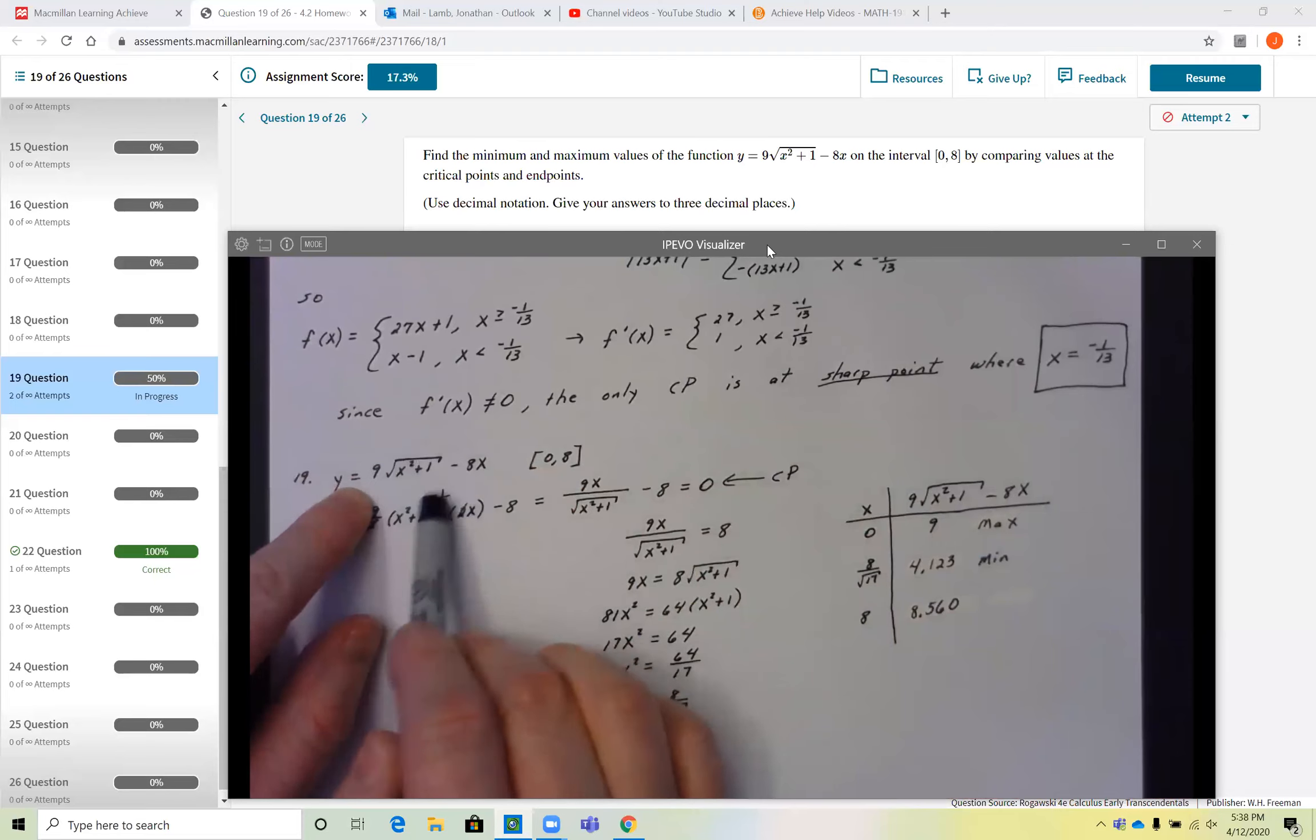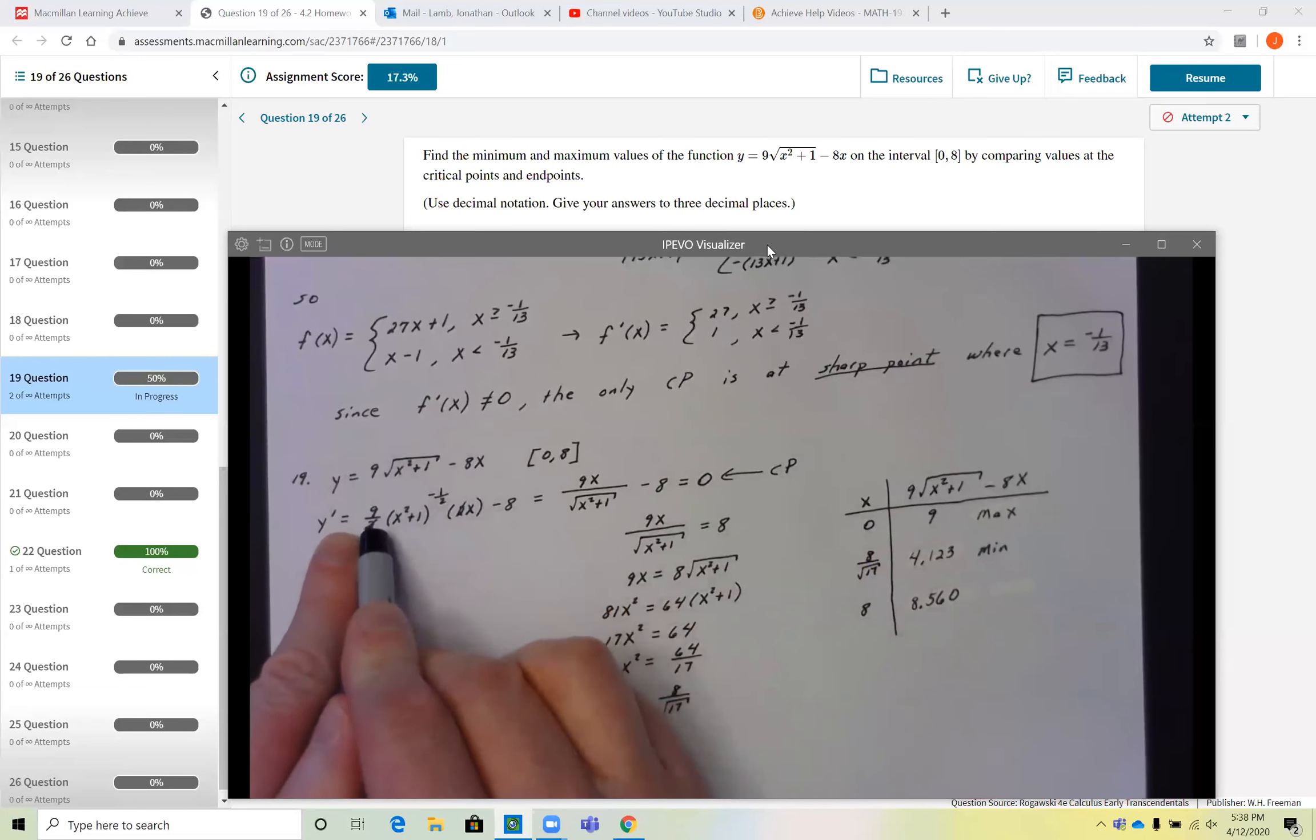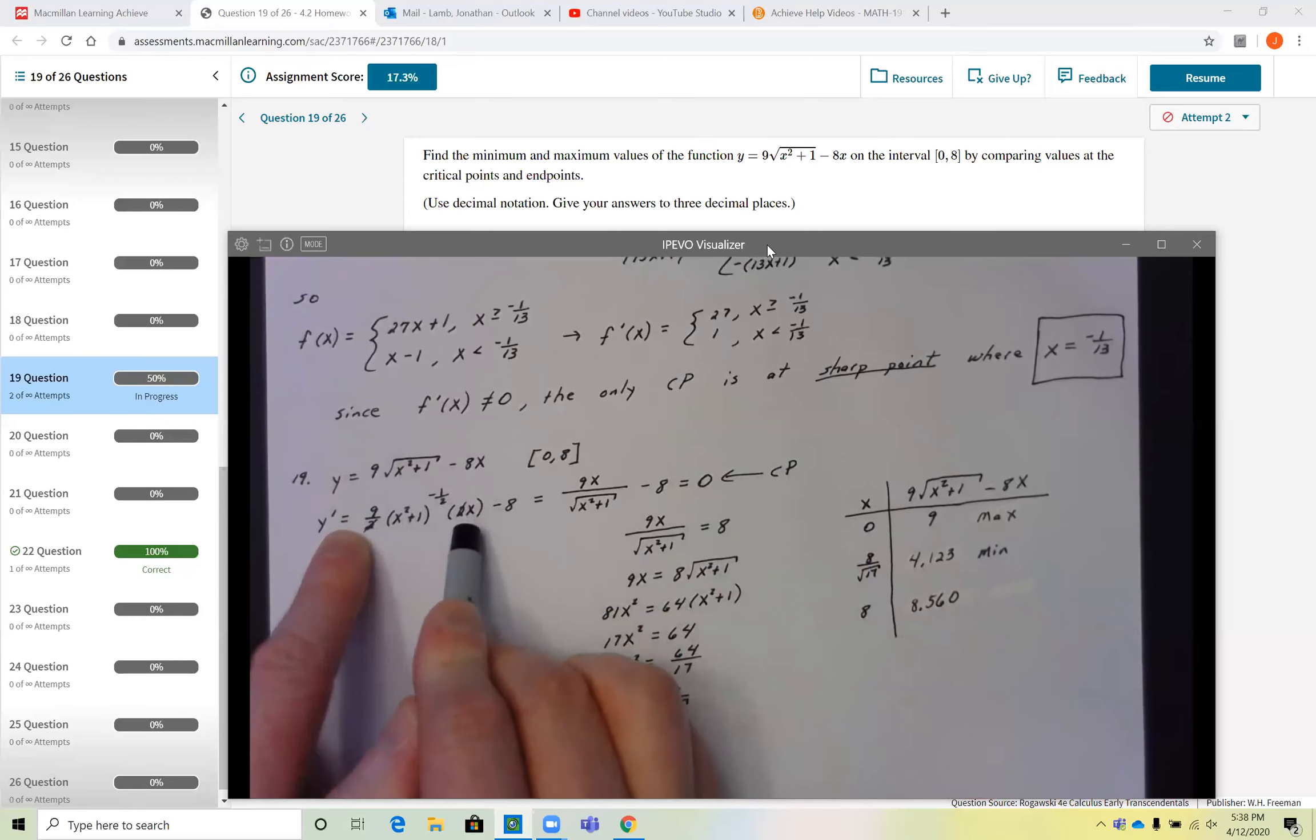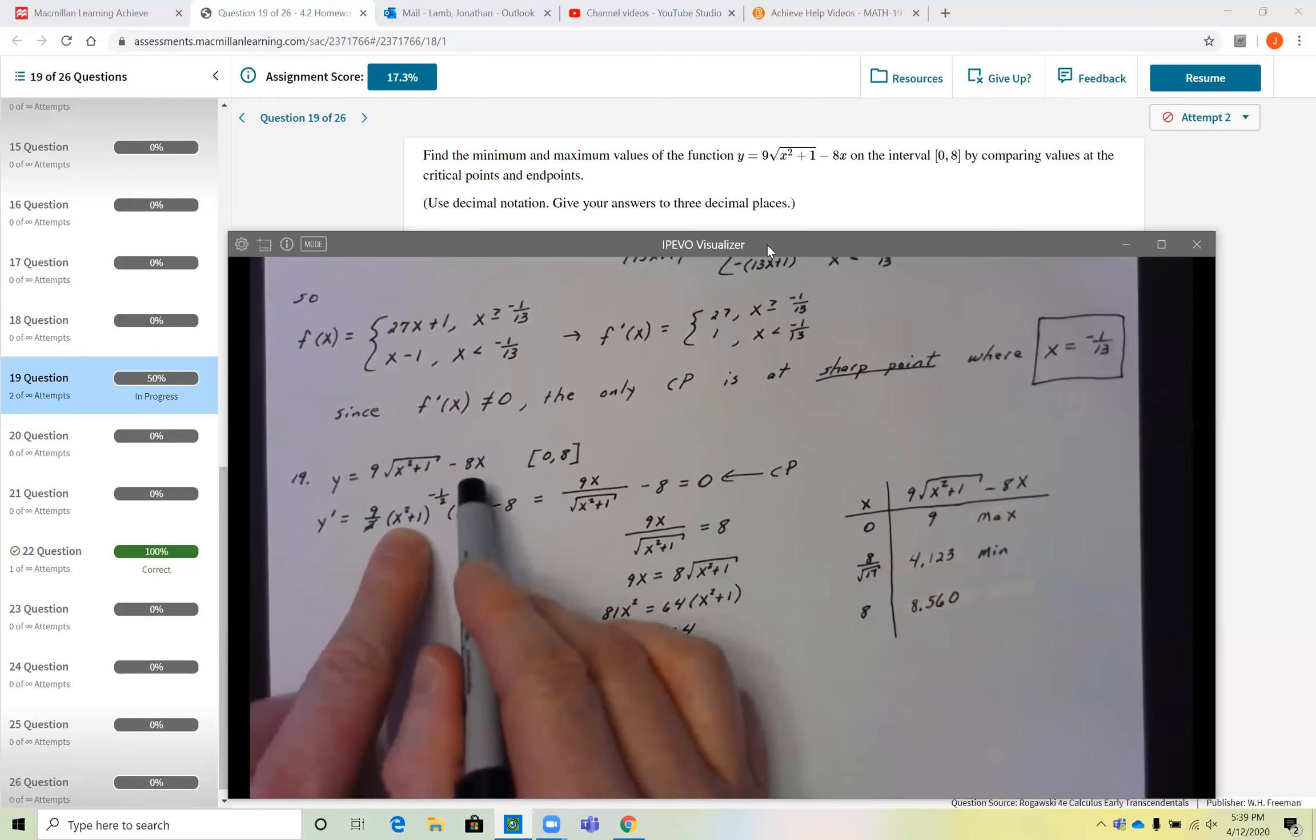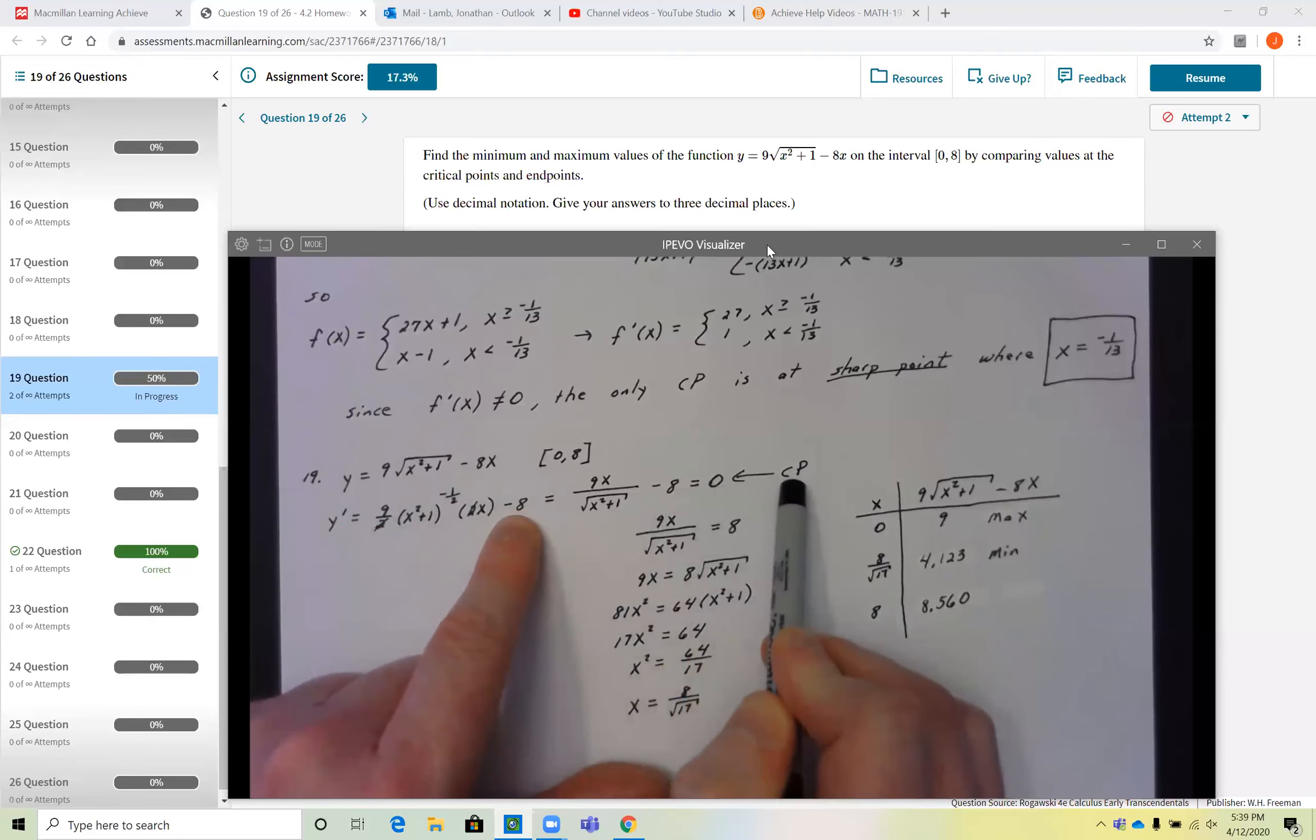We know that this group is to the one half power, the square root, same thing as the one half power. So I brought the one half down in front, got the 9 over 2, times x squared plus 1 to the negative one half power. Chain rule says times the derivative of the inside. We get the 2x there. Of course, the derivative of minus 8x is minus 8. Now in this first term, I went ahead and canceled the 2 out that I was multiplying with the 2 in the denominator. And then this term simplified to be 9x over the square root of x squared plus 1. From that, we have to subtract out the 8 and set it equal to 0 to find the critical points.